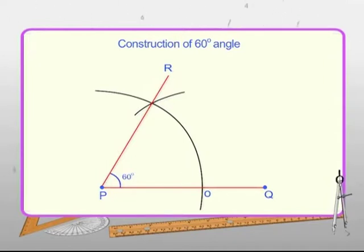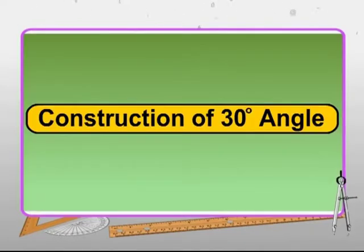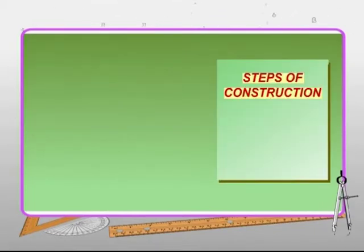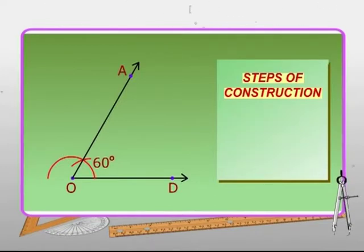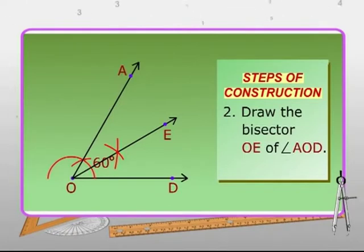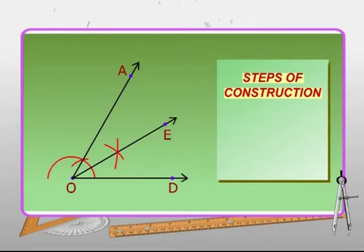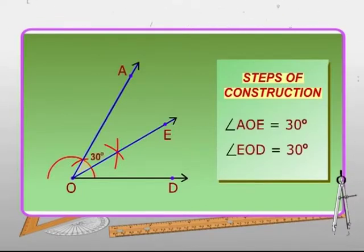Now is the time to look at the construction of angle 30 degrees and 150 degrees from the basic entity. Let us see the construction of a 30 degree angle. Here are the steps of the construction. In the first step, construct an angle AOD equal to 60 degrees as shown in the figure. Then draw a bisector OE of angle AOD. The bisector divides angle AOD into two equal parts that are angle AOE and angle EOD. Both these angles measure 30 degrees.